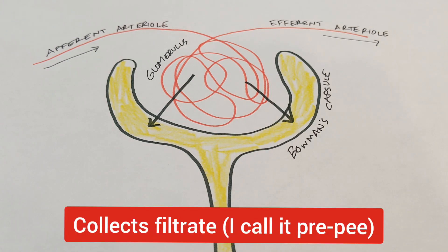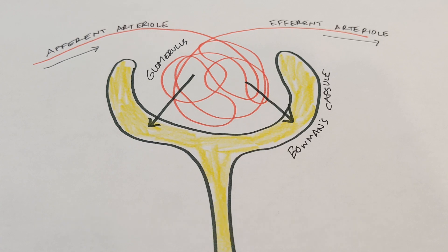That's why I've colored it yellow, because the filtrate is basically like pre-urine. It's not yet urine — it needs to get a lot more concentrated. Most of what goes in is not going to come out as urine; it's going to be reabsorbed. But this is sort of pre-urine.